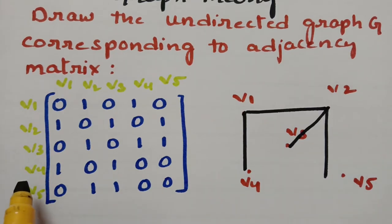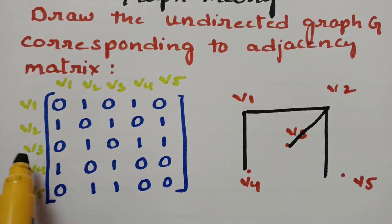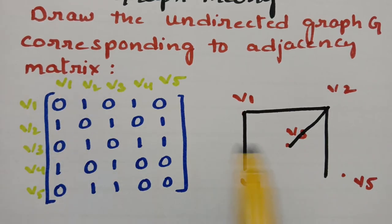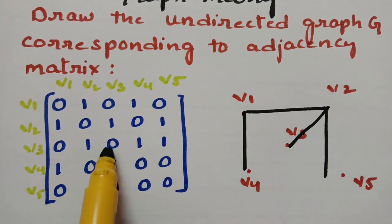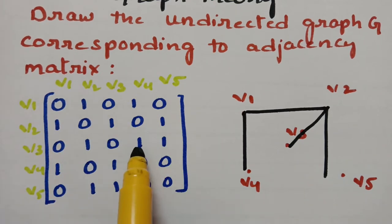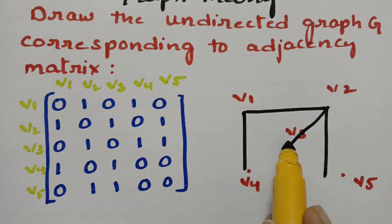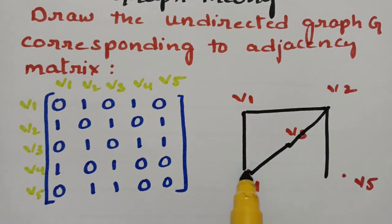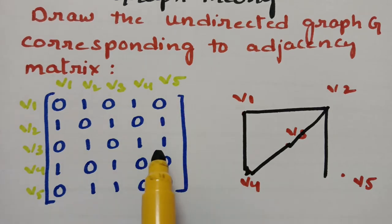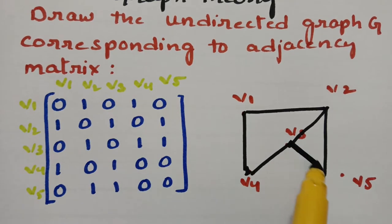Next, talking about v3. V3 to v1: no edge. V3 to v2: there is 1 edge, already done. V3 to v3: 0. V3 to v4: 1, so I have to take 1 edge here. And v3 to v5: there is 1 edge here.